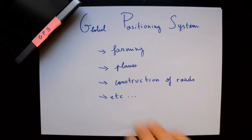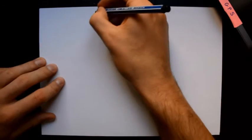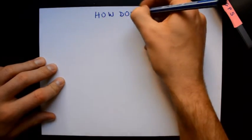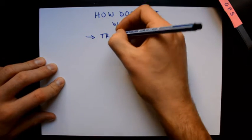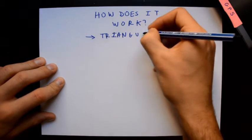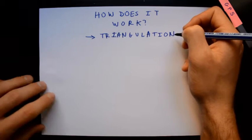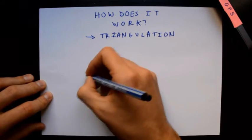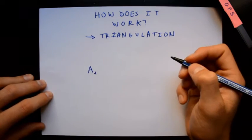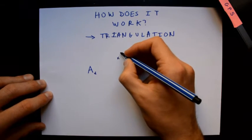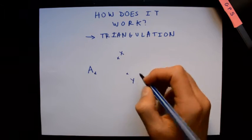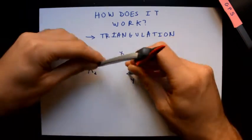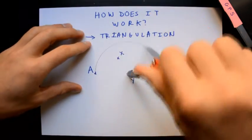But how does the GPS actually work? Well, it's pretty simple. Let's see with the example of triangulation. Imagine you are point A and you want to be located with the help of the points Y and X. The triangulation method will help you find yourself with this method.